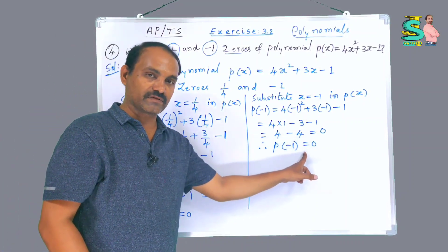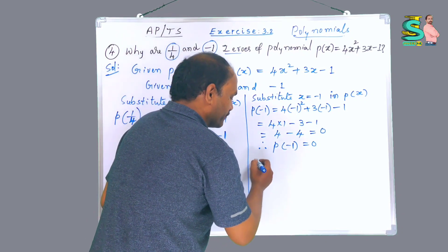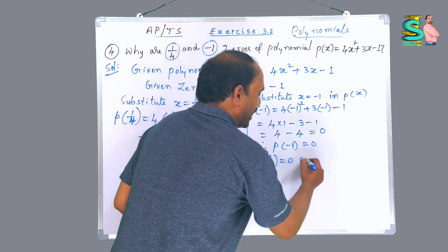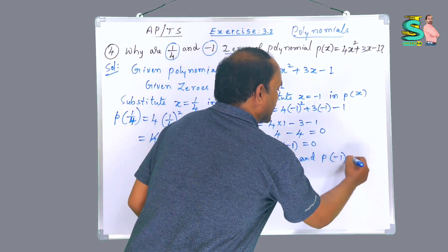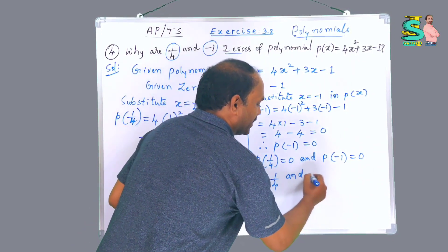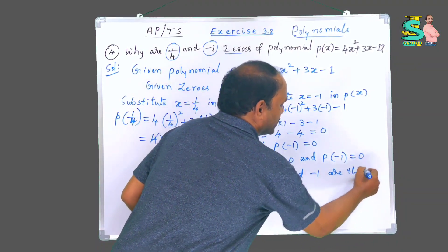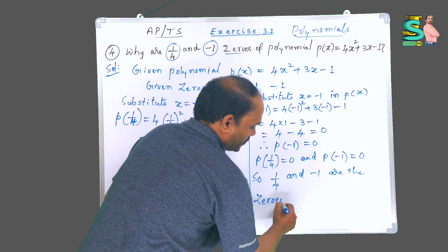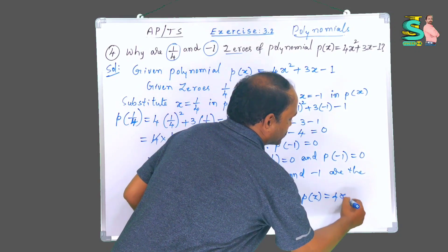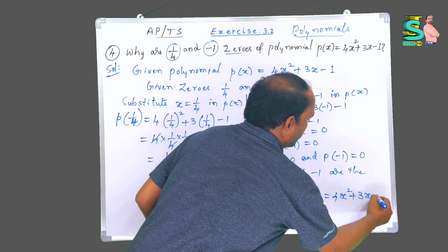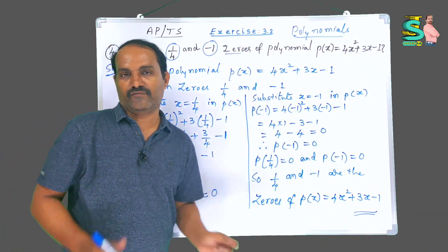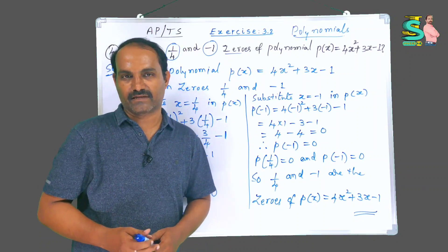p(1/4) = 0 and p(-1) = 0. Hence 1/4 and -1 are the zeros of p(x) = 4x² + 3x - 1. Is it understood? We proved it like this. If you like, please like, share, and subscribe to my channel. Thank you very much.